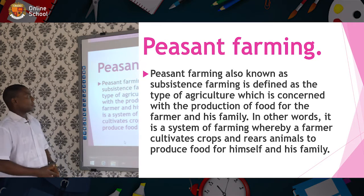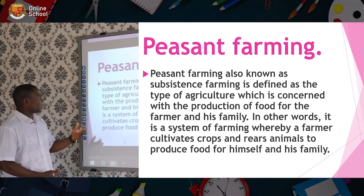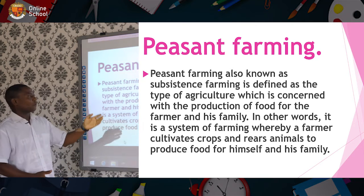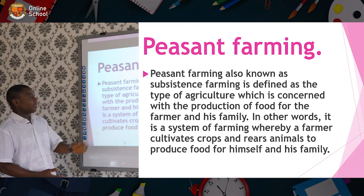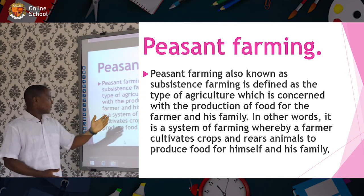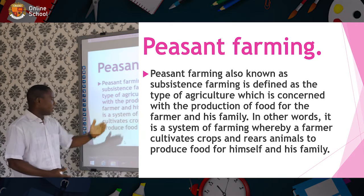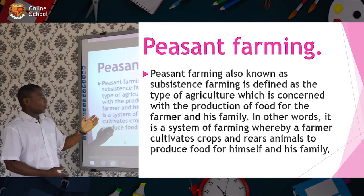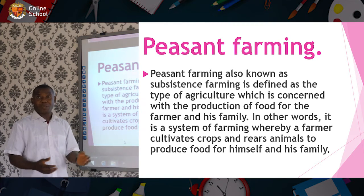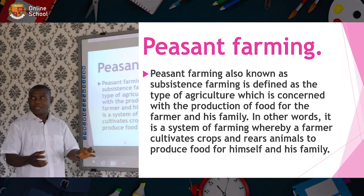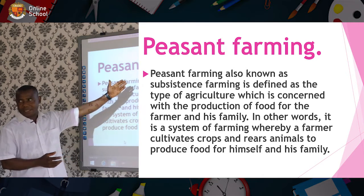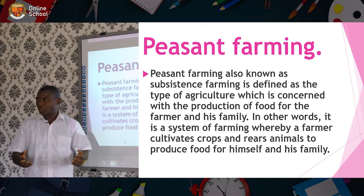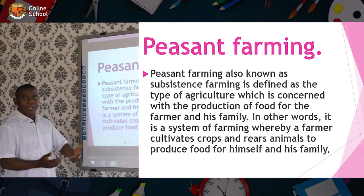What is peasant farming? Peasant farming, also known as subsistence farming, is defined as the type of agriculture which is concerned with the production of food for the farmer and his family. In other words, it is a system of farming whereby a farmer cultivates crops and rears animals to produce food for himself and his family. The majority of farmers in our localities fall under this category because they are peasant farmers. They don't produce much but they produce a little for their own upkeep and their families.